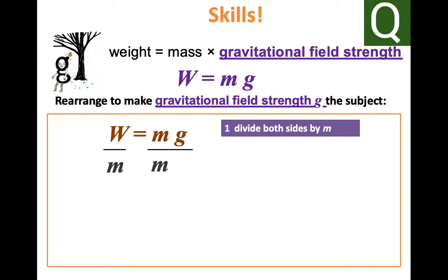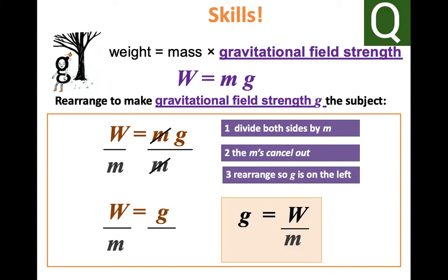Very simply we divide both sides by the mass. They will then cancel themselves out and you are left with gravity equals weight divided by mass.